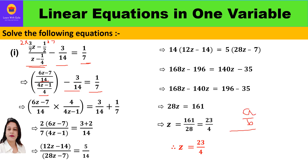As I have already explained in my previous videos, whenever we have two fractions a/b upon c/d, we solve them by multiplying by the reciprocal. So here, (6z minus 7)/14 is multiplied by 4/(4z minus 1), taking the reciprocal of (4z minus 1).